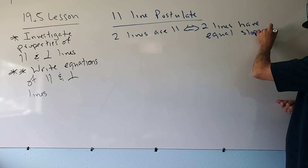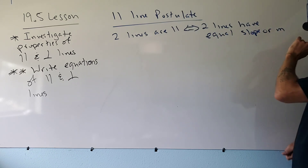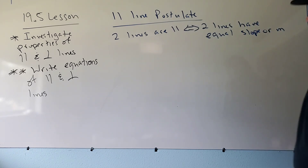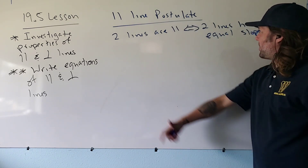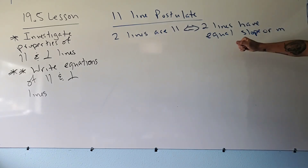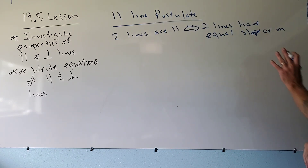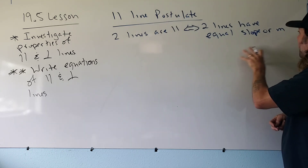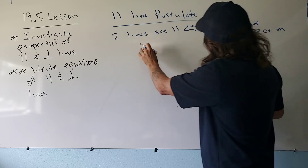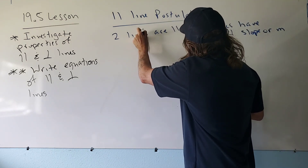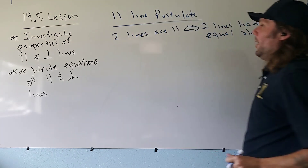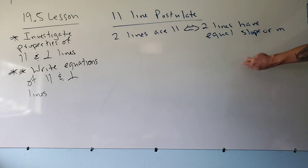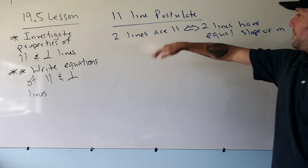Instead of slope I could just say m — remember, m is our symbol for slope. Two lines are parallel if and only if they have equal slope. This is a biconditional statement: if I tell you the lines are parallel, you automatically know they have equal slope. And if lines have equal slope, you can conclude the two lines must themselves be parallel.